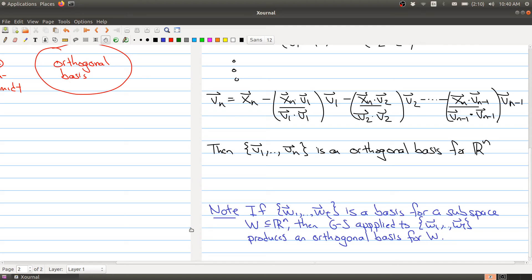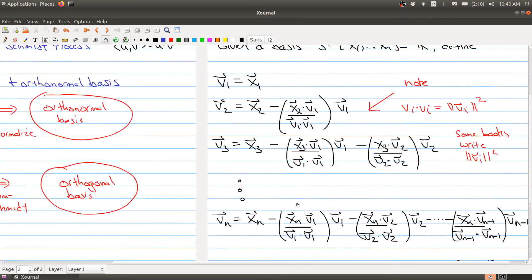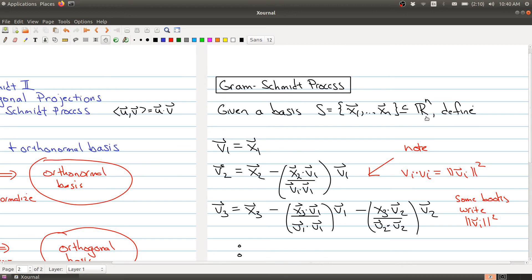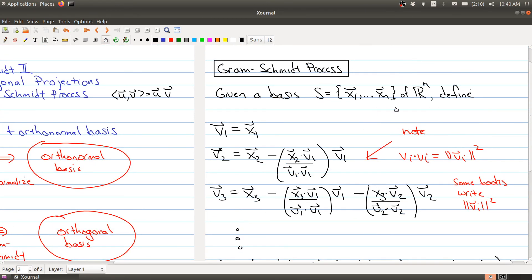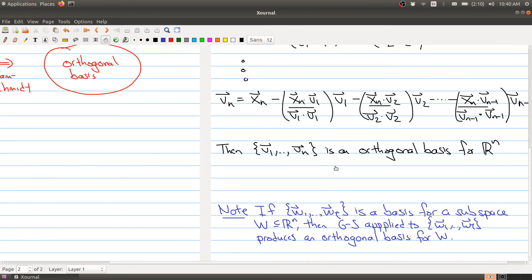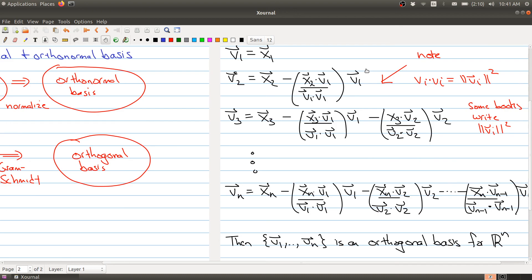And before we pause to give an example, let me just make one comment here, is that the statement says that you're given a basis for R^n. So x1 through xn is a basis of R^n, but you don't actually need that strong hypothesis that you only have a basis for R^n. Let's say you have a subspace W and w1 through wt is a basis for the subspace. Then if you just apply the Gram-Schmidt process to that set, what you're going to do is just get an orthogonal basis for W. So the formula has a lot of things to remember, but it's not that hard to use. And we'll do an example in the next part of today's lecture.